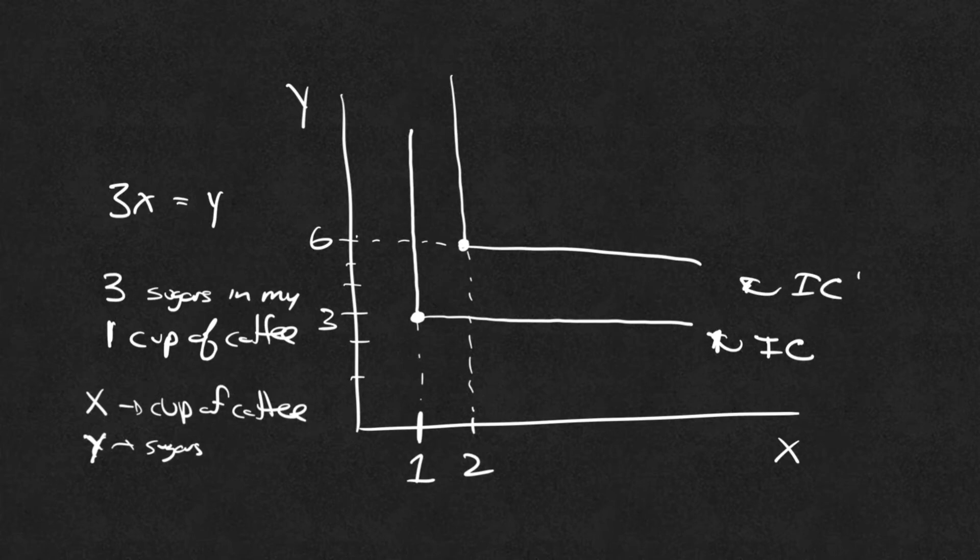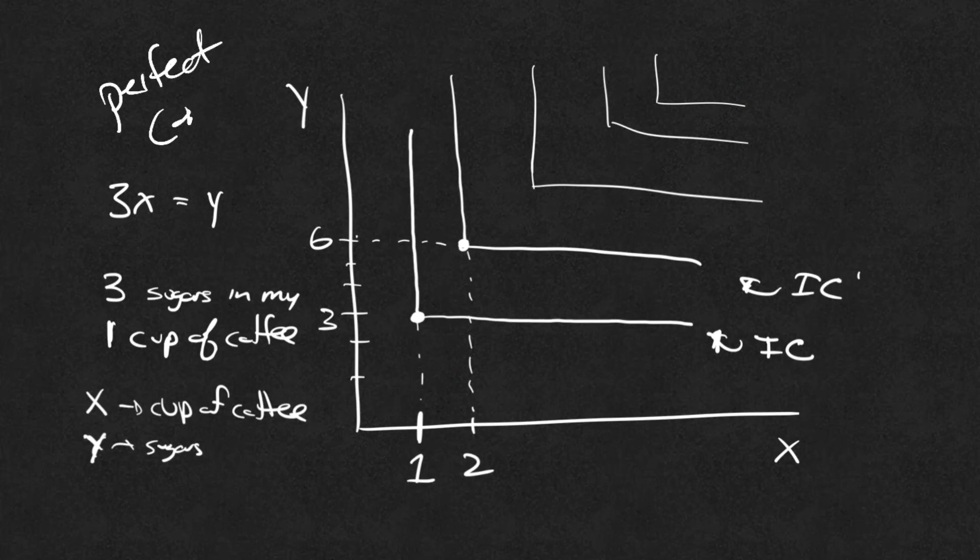And as you know, you could just have a bunch of different indifference curves up here. If this was three and nine and you just keep going up, this is my overall plane of the indifference curves for this. So again, this is perfect compliments. I hope you enjoyed this video. And if you have any questions at all you'd like me to cover, please put them in the comments below. Let me know what your favorite example is for perfect compliments.